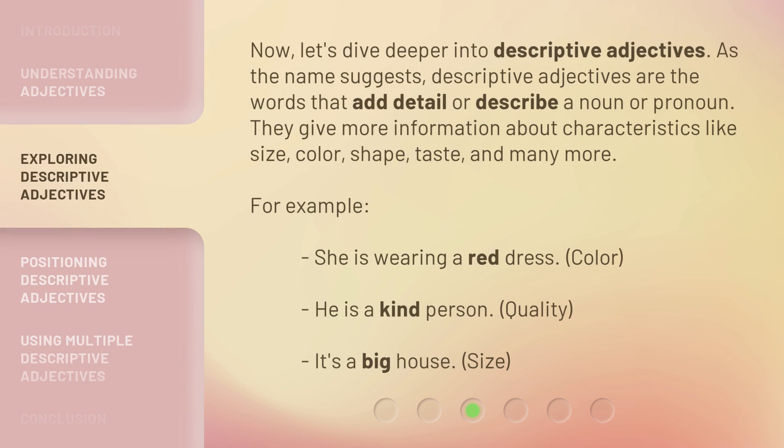Now, let's dive deeper into descriptive adjectives. As the name suggests, descriptive adjectives are words that add detail or describe a noun or pronoun. They give more information about characteristics like size, color, shape, taste, and many more. For example: 'She is wearing a red dress' (color); 'He is a kind person' (quality); 'It's a big house' (size).